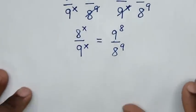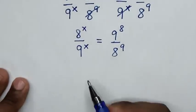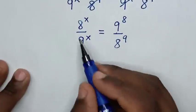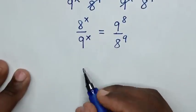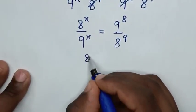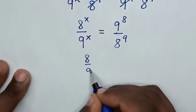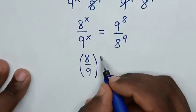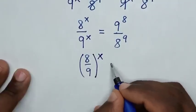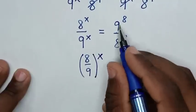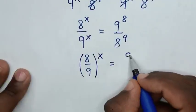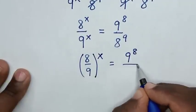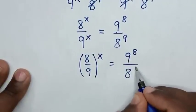Then, in the next step, because we have a common power of x, our equation will be (8 over 9) bracket to the power of x, is equal to 9 power of 8 over 8 power of 9.